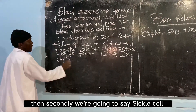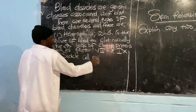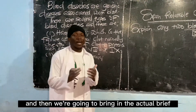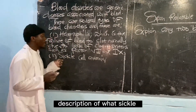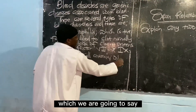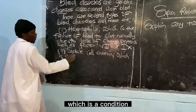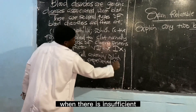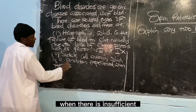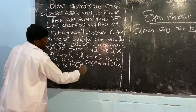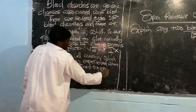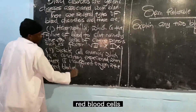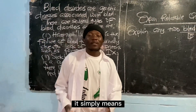Secondly, we are going to say: sickle cell anemia, which is the condition experienced when there is insufficient oxygen in the red blood cells, hence causing them to attain a sickle cell shape.